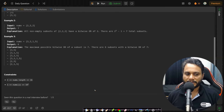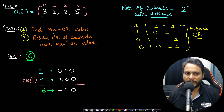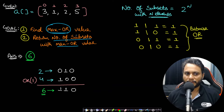The constraint says that the array length will be no more than 16, and each of the elements will be a positive number from 1 to 10^5. Let's look at some examples for better understanding. Let's say our given array is [3, 1, 2, 5]. The goal is to solve two problems: first, find the maximum OR value of the given array, and second, return the number of subsets with this exact maximum OR value.